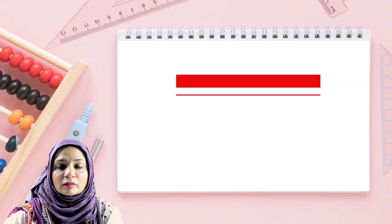Let's look at another example of direct proportion. More number of books in a bag means more weight of the bag. And if there are less number of books in the bag, we'll have less weight of the bag. We can see that they are directly proportional to each other. So two quantities are said to be directly proportional where, as one quantity increases, the other also increases, and as one quantity decreases, the other also decreases.